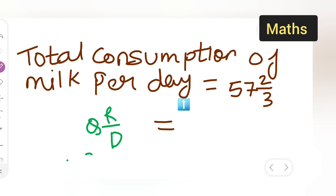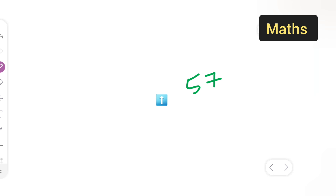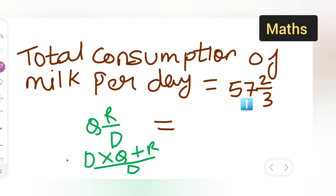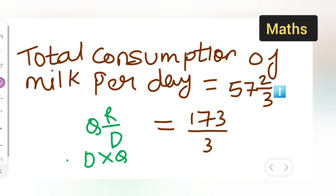To convert, we multiply the denominator with the quotient and add the remainder, keeping the same denominator. The denominator is 3, so 3 multiplied by 57 equals 171. Then 171 plus 2 gives us 173. So the mixed fraction 57 and 2/3 becomes 173/3.